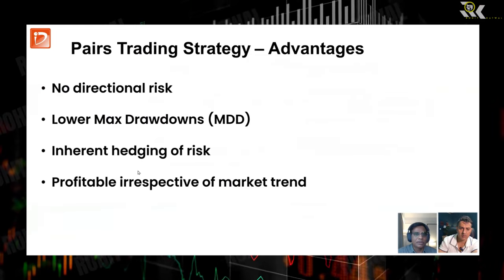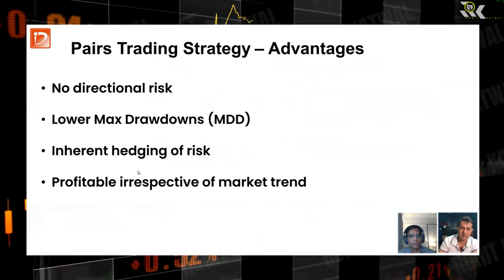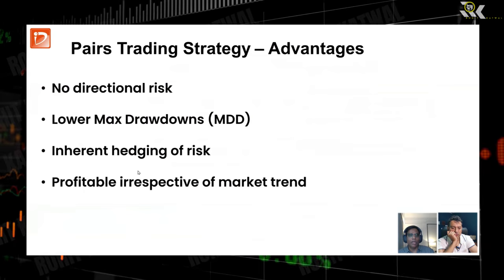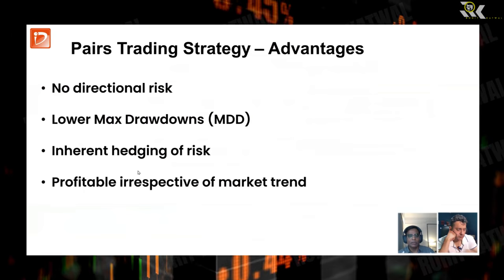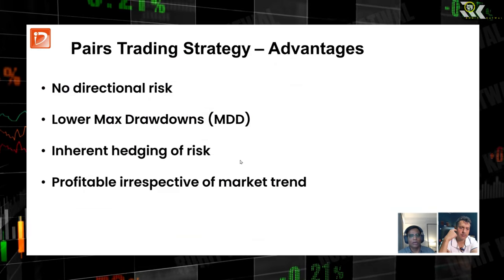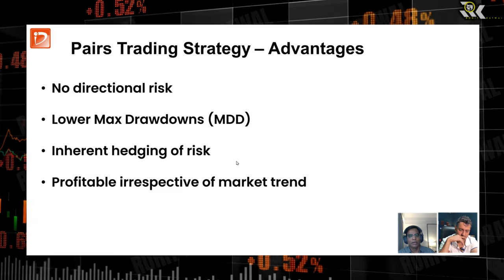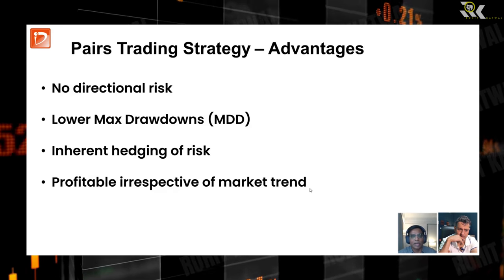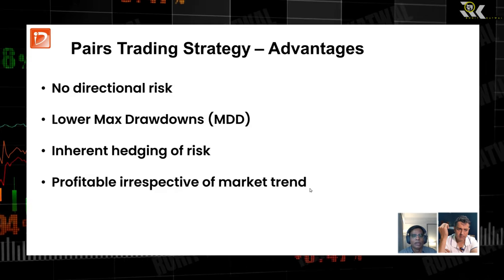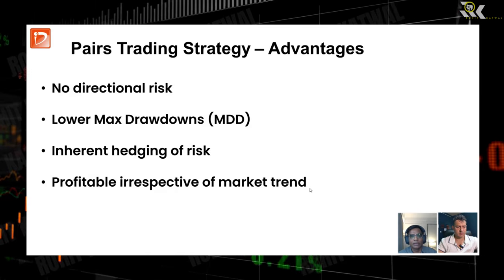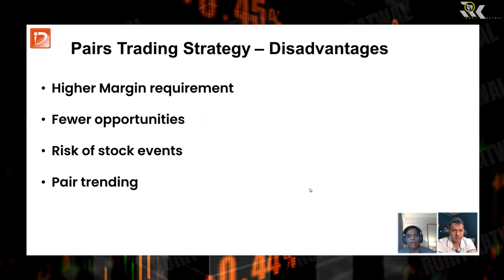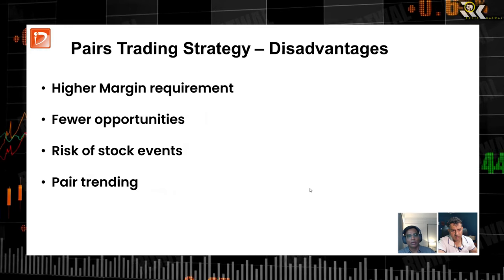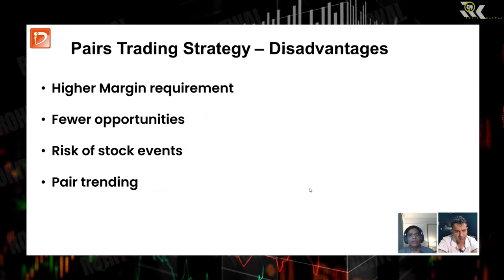The advantages of pair trading strategy: there is no directional risk; there are lower maximum drawdowns because the pair is inherently hedged to each other — we have already measured that they have a mean-reverting phenomenon between them; and it will be profitable irrespective of market trend — you can do it in bullish, bearish, or sideways market because the pair has that established mean-reverting behavior.